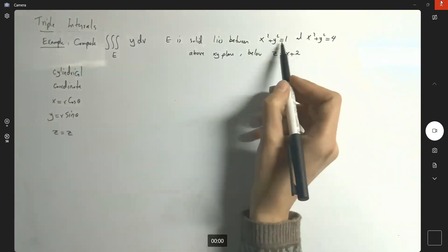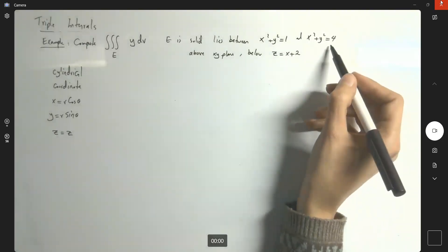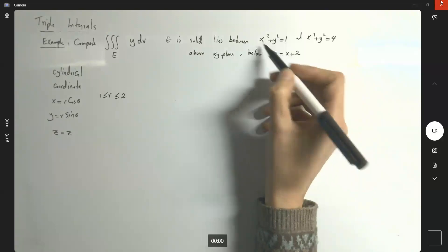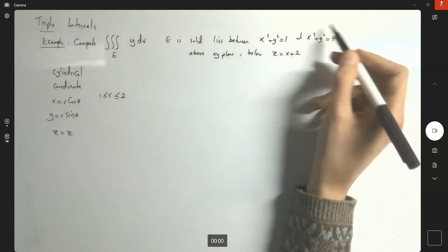So obviously the radius here is 1. The radius here is 2. So r, or the radius, is bounded between 1 and 2. So this guy has a radius 1, and this guy has a radius 2.